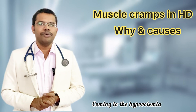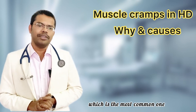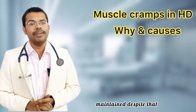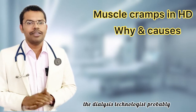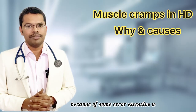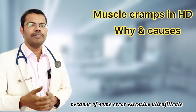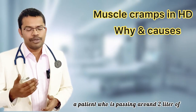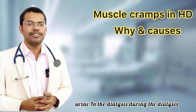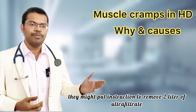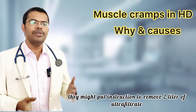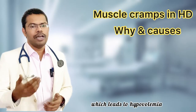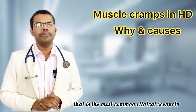Coming to hypovolemia, which is the most common — many times a patient's urine output might be maintained, but despite that, the dialysis technologist, probably because of some error, may remove excessive ultrafiltrate. For example, a patient who is passing around two liters of urine — during dialysis they might be instructed to remove two liters of ultrafiltrate, which might not be required, leading to hypovolemia. That is the most common clinical scenario.